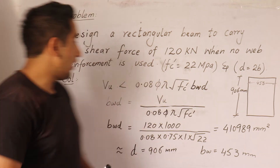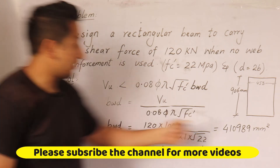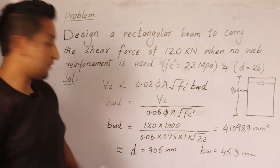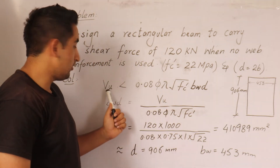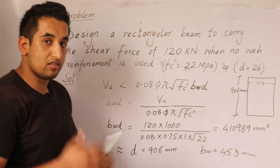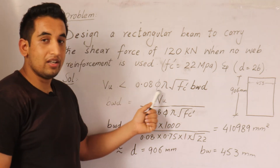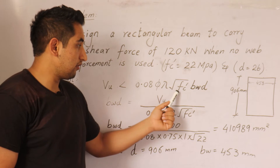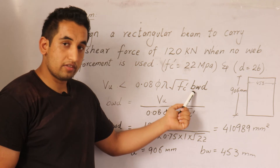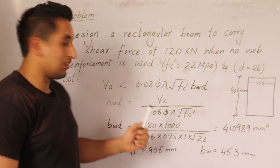We can calculate the basic cross-section using this formula: the applied shear force or shear capacity should be less than 0.08 × phi × lambda × square root of fc', where fc' is the 28-day compressive strength, BW is the width of the beam, and D is the depth of the beam.